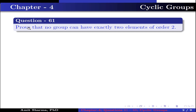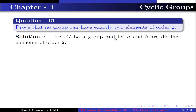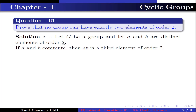Question number 61: Prove that no group can have exactly two elements of order 2. Let G be a group and let A and B be distinct elements of order 2. If A and B commute, then AB is the third element of order 2, because (AB)² = A²B² = identity, since A² = identity and B² = identity. This implies the order of AB is 2.